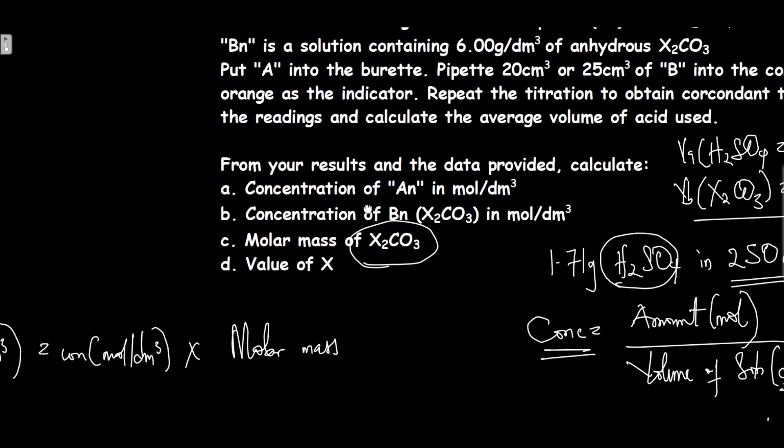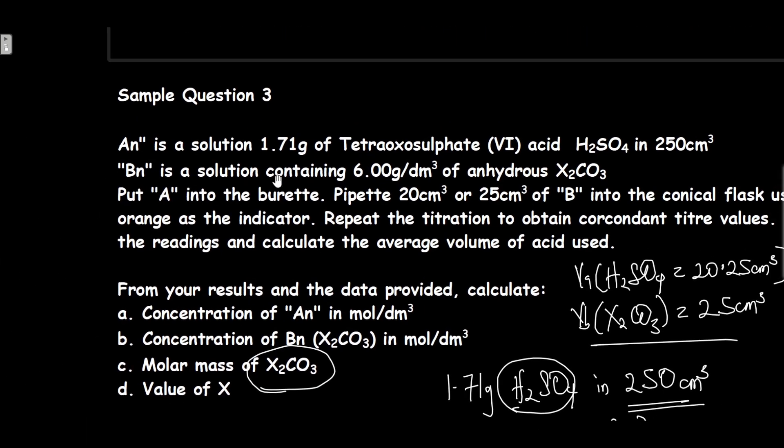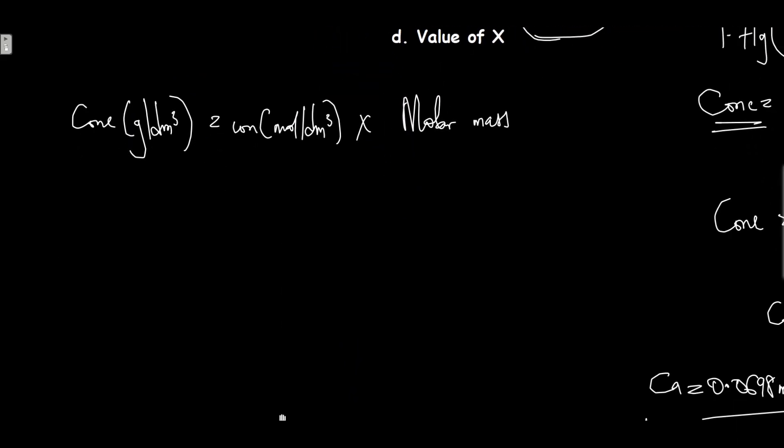we are given the concentration in grams per dm³. It says BN contains 6.00 grams per dm³ of this unknown compound. The concentration in grams per dm³ is 6.00, and the concentration in mol/dm³ we just calculated is 0.0565 mol/dm³ times the molar mass, which is what we're looking for.